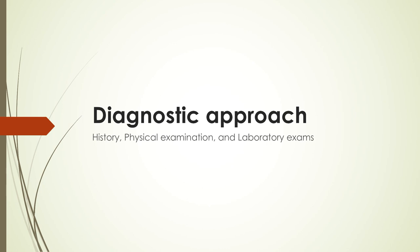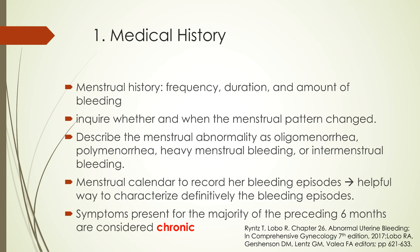Let us now discuss the diagnostic approach for AUB. First is doing a thorough medical history. We ask the patient about the frequency, duration, and amount of bleeding, and we inquire whether and when the menstrual pattern changed. From these details, we describe the menstrual abnormality — whether it is oligomenorrhea, polymenorrhea, heavy menstrual bleeding, or intermenstrual bleeding. Encourage the patient to record her bleeding episodes in a menstrual calendar. If abnormal uterine bleeding has been present for the majority of the preceding six months, then the patient has chronic AUB.